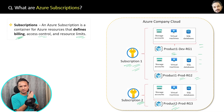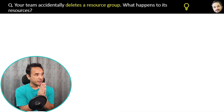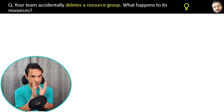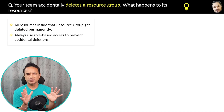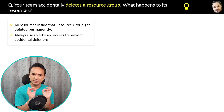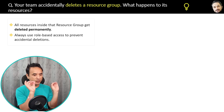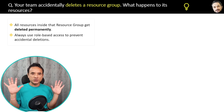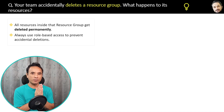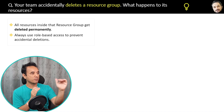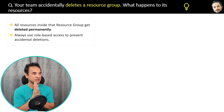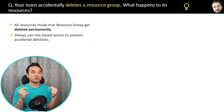Quick scenario: your team accidentally deletes a resource group — what happens to its resources? The answer is all resources inside that resource group will be deleted permanently. If you delete a subscription, all the resource groups including their resources will be deleted. So always use role-based access control to prevent accidental deletions — only a manager with the appropriate role should be able to delete things, not a developer.